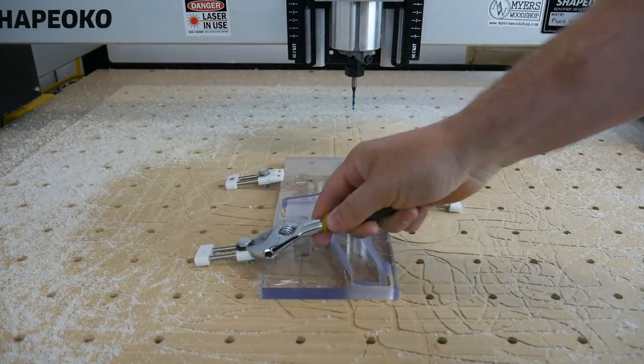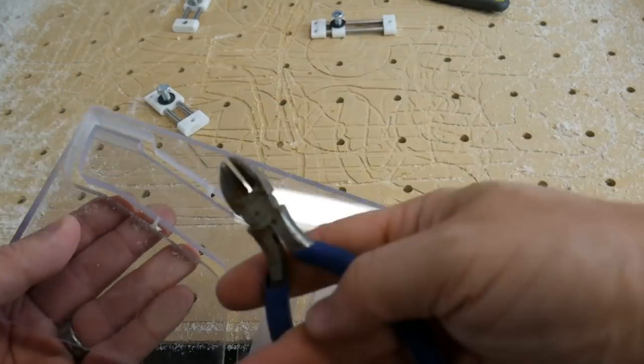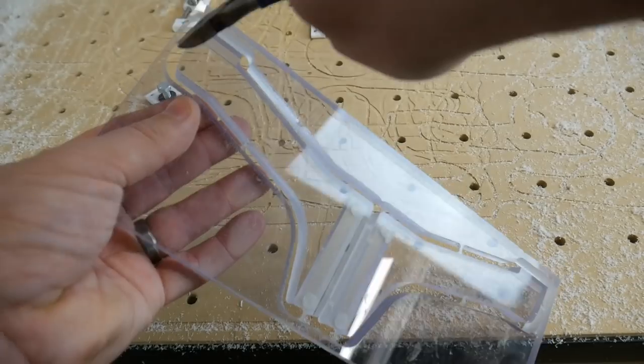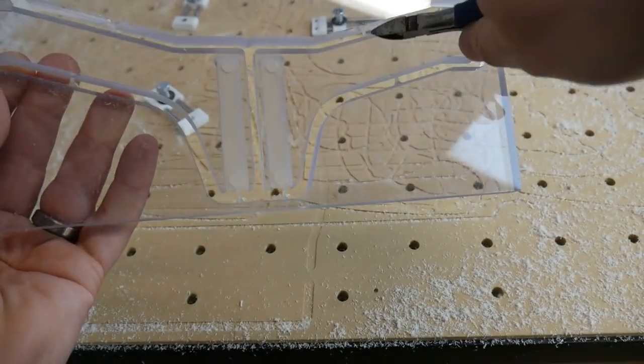Once it's finished cutting, remove it from the waste board. We like to use a pair of snips to remove the tabs. If worse comes to worse, you can use a pair of scissors.